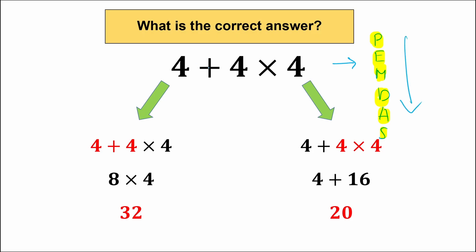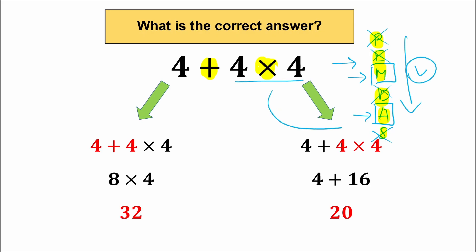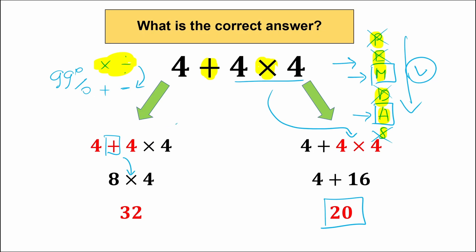In our example question 4+4×4, what mathematical operators do we have? We have addition and multiplication. We don't have parentheses, we don't have exponents, we don't have division, we don't have subtraction. So we have only multiplication and only addition. What letter comes first from top to bottom in PEMDAS? Of course, M — multiplication. So the first thing we multiply 4 times 4, and the correct answer according to PEMDAS is 20. The wrong solution does addition first, then multiplication — multiplication and division always come before addition and subtraction.